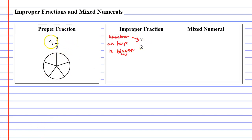You'll notice that when we look at the proper fraction, the number on top is smaller than the number on the bottom. These are the everyday fractions that we've been covering in the last few topics.